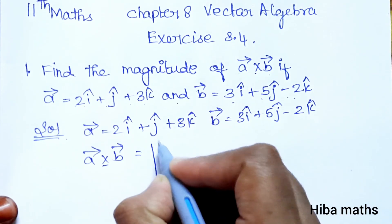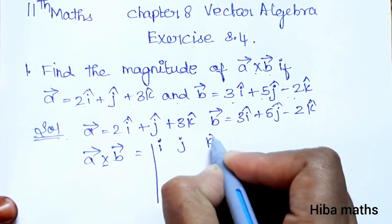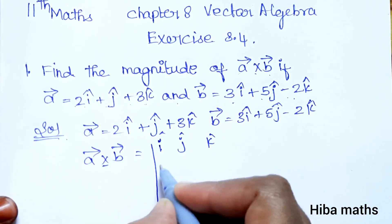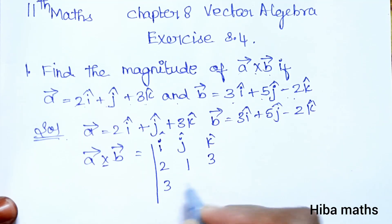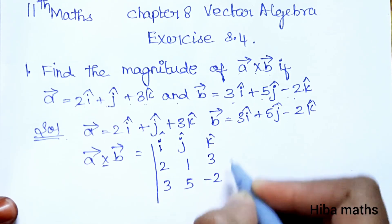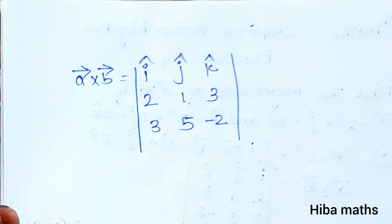Now the matrix format is: i j k in the first row, the first vector is 2 1 3, and the second vector is 3 5 minus 2.